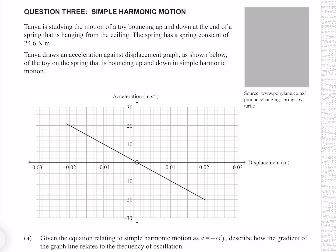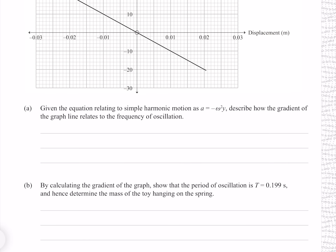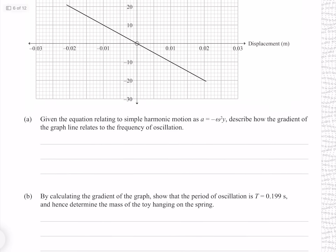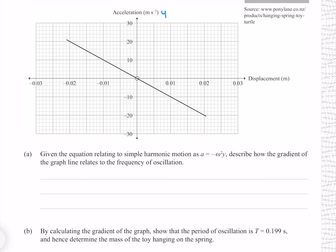Question 3. Tanya is studying the motion of a toy bouncing at the end of a spring hanging from the ceiling. The spring constant is 24.6 N/m. Tanya draws an acceleration-against-displacement graph of the toy in simple harmonic motion. Given a equals negative ω²y, describe how the gradient relates to frequency. Since acceleration is y and displacement is x, and y equals mx, the gradient must be negative ω². Since omega equals 2πf, substituting gives gradient equals negative 4π²f².